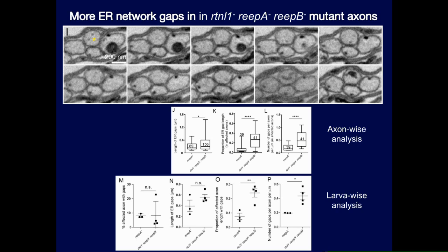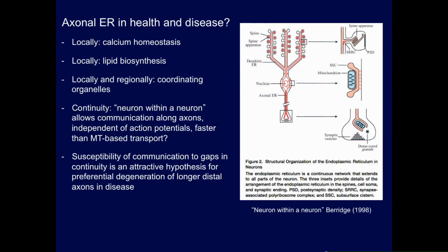What could the functional consequences be? Local effects on axon physiology could include calcium homeostasis, lipid biosynthesis, and coordination of organelles. A particularly striking feature of ER is its physical continuity along neurons — it has been compared to a neuron within a neuron by Mike Berridge. Disruption of that continuity is an attractive hypothesis for the basis of the disease, because it could explain why longer axons are preferentially susceptible: a longer axon is more likely to have a gap somewhere in the network than a shorter one.